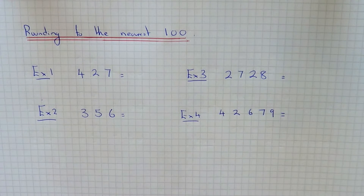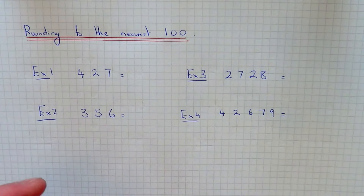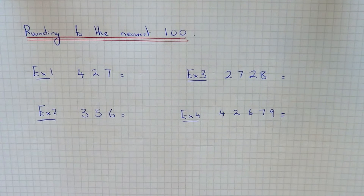So this will either be 100, 200, 300, 400, 500, 600, 700, 800, 900, or 1000.